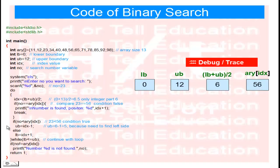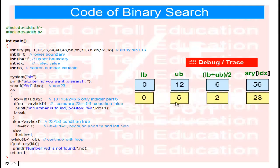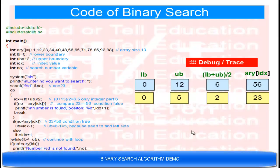Is 23 equal to 56? False. Is 23 less than 56? This condition is true. So upper boundary = IDX - 1 = 6 - 1 = 5. Now IDX = (0 + 5) / 2 = 2.5 — integer part gives IDX = 2. At index 2, the value is 23. Is 23 == 23? Yes — number found at position index + 1 = 3. The loop breaks.